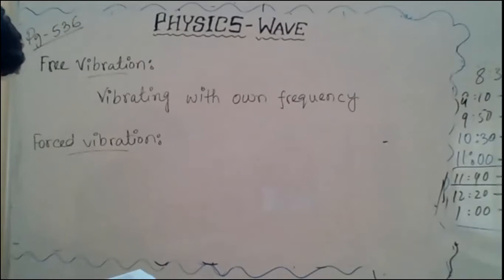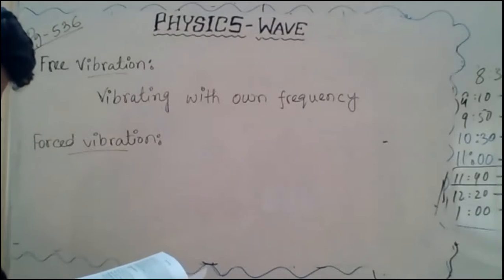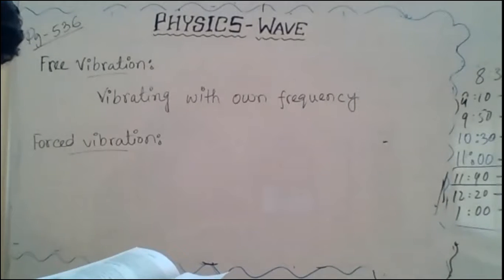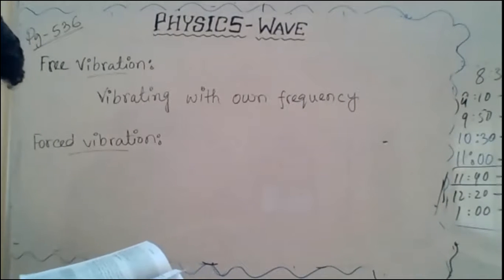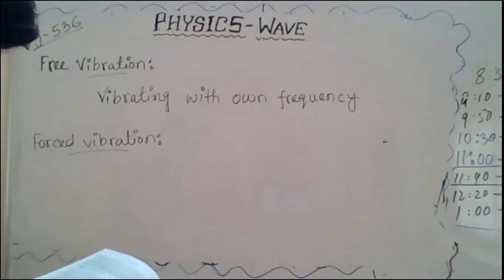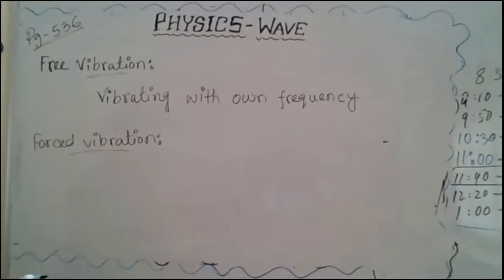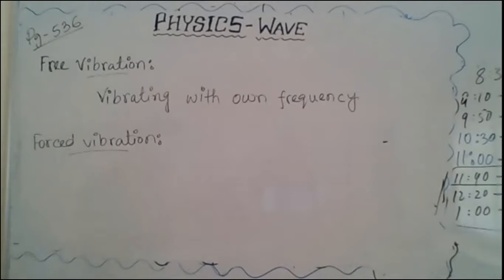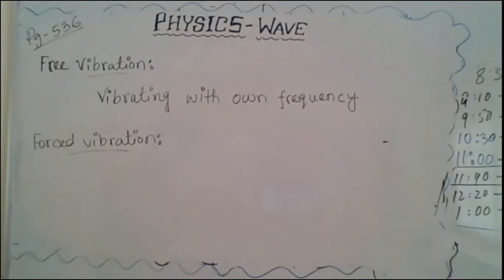In the last class we went through the stationary wave and the calculation of antinodes and nodes. We get antinodes whenever we get even multiples of lambda over two, and we get nodes when we get odd multiples of lambda over two. If you have any doubt in the previous topic, let me know now. I don't see any hands raised, so that means there is no doubt.